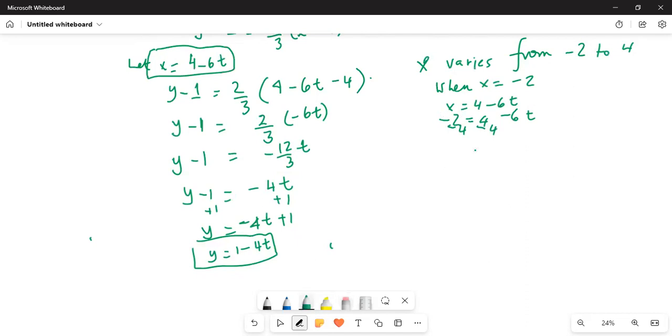So we get -6 is equal to -6t. Then we divide by -6 on both sides and t becomes equal to 1. So when x equals -2, t equals 1.